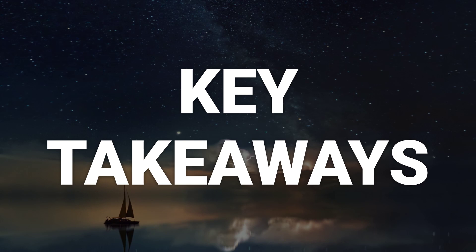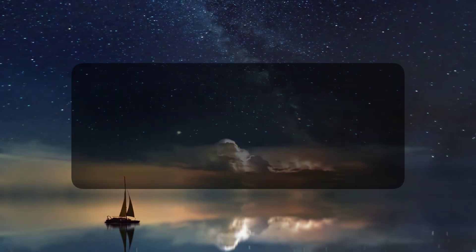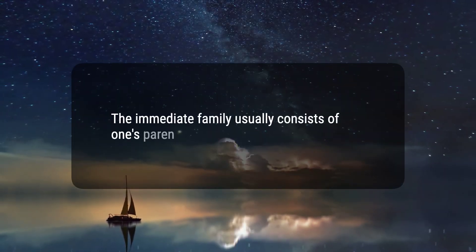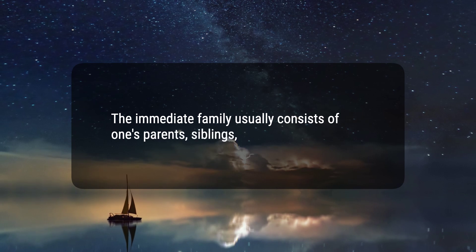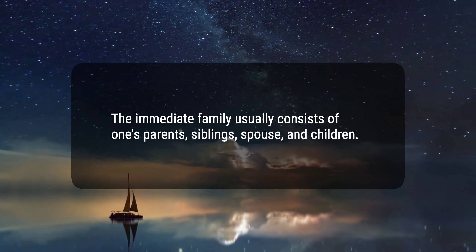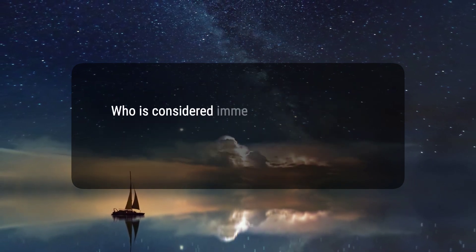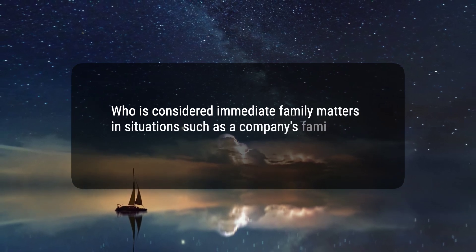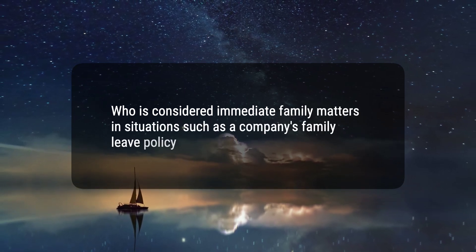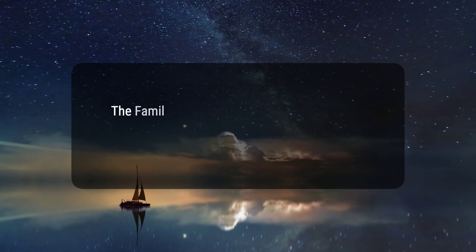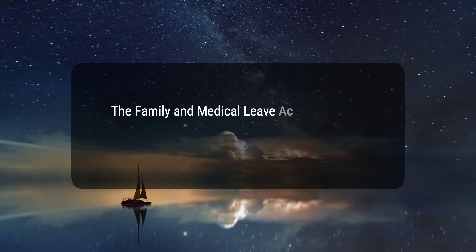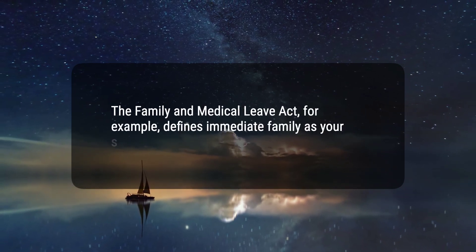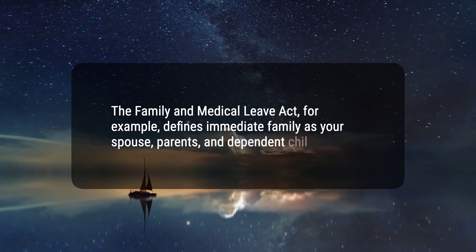Here are five key takeaways. One: the immediate family usually consists of one's parents, siblings, spouse, and children. Two: who is considered immediate family matters in situations such as a company's family leave policy. Three: the Family and Medical Leave Act defines immediate family as your spouse, parents, and dependent children.